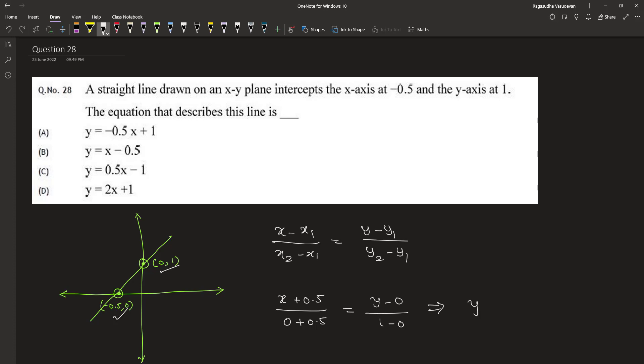This implies that y is equal to x plus 0.5 divided by 0.5. This implies y is equal to 2x plus 1 which is option D.